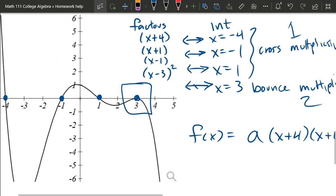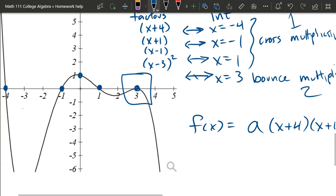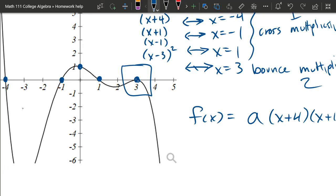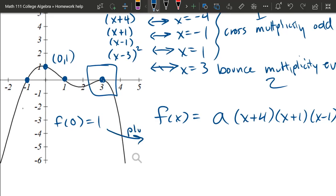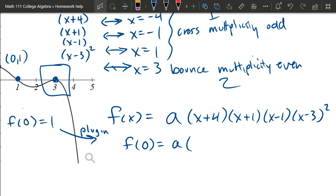We're going to look at a point that's not on the x-axis. The only point I really see that's pretty clear is the one on the y-axis right there. That means f of 0, because the x-coordinate is 0, is equal to the y-coordinate of 1. And now we're going to plug it in.